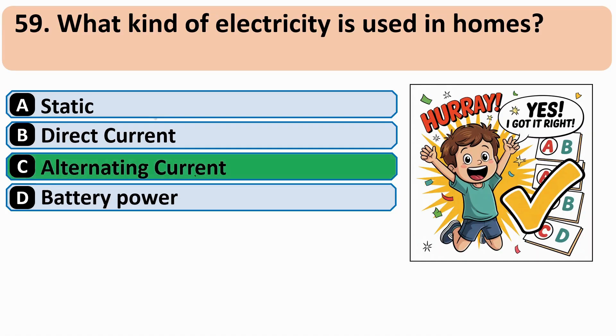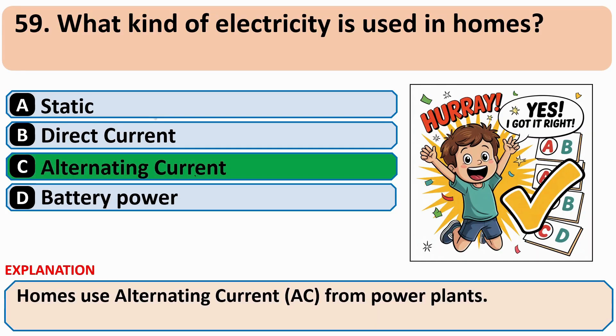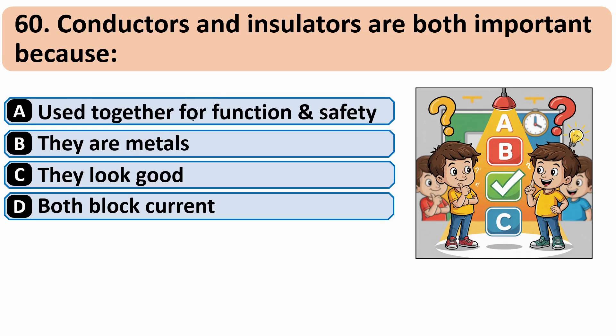What kind of electricity is used in homes? The correct answer is C: Alternating current.